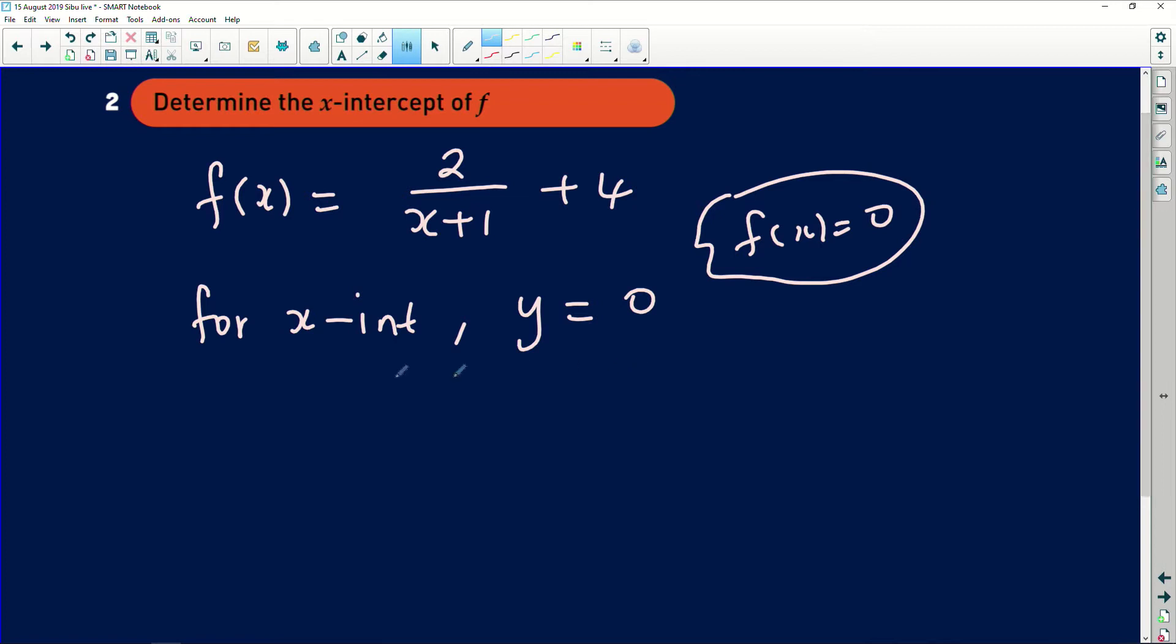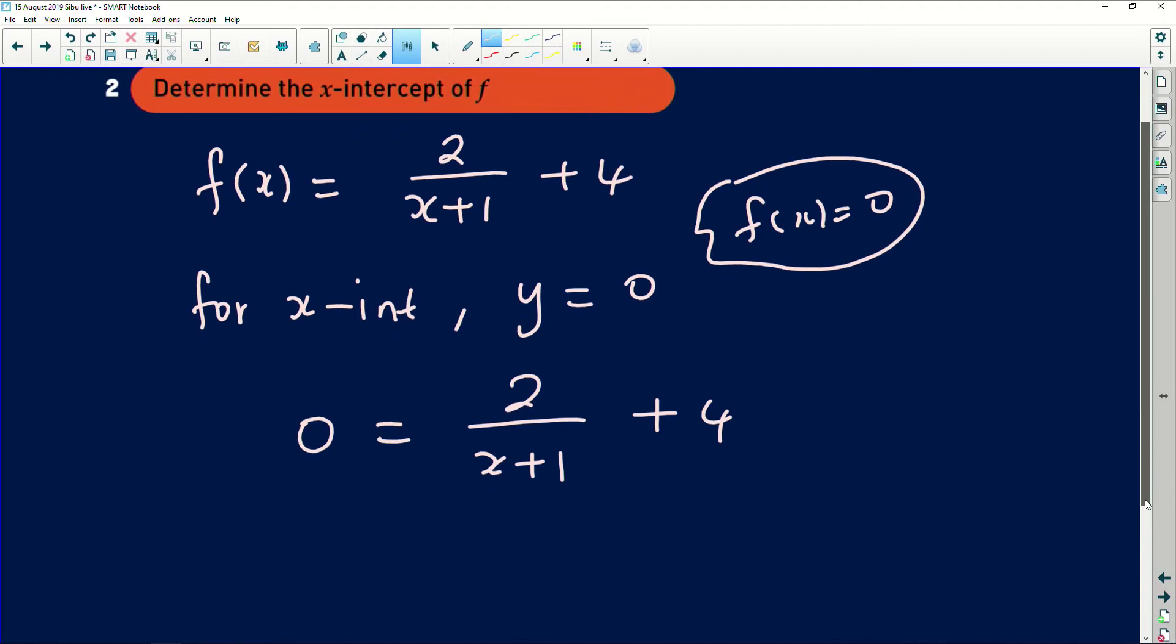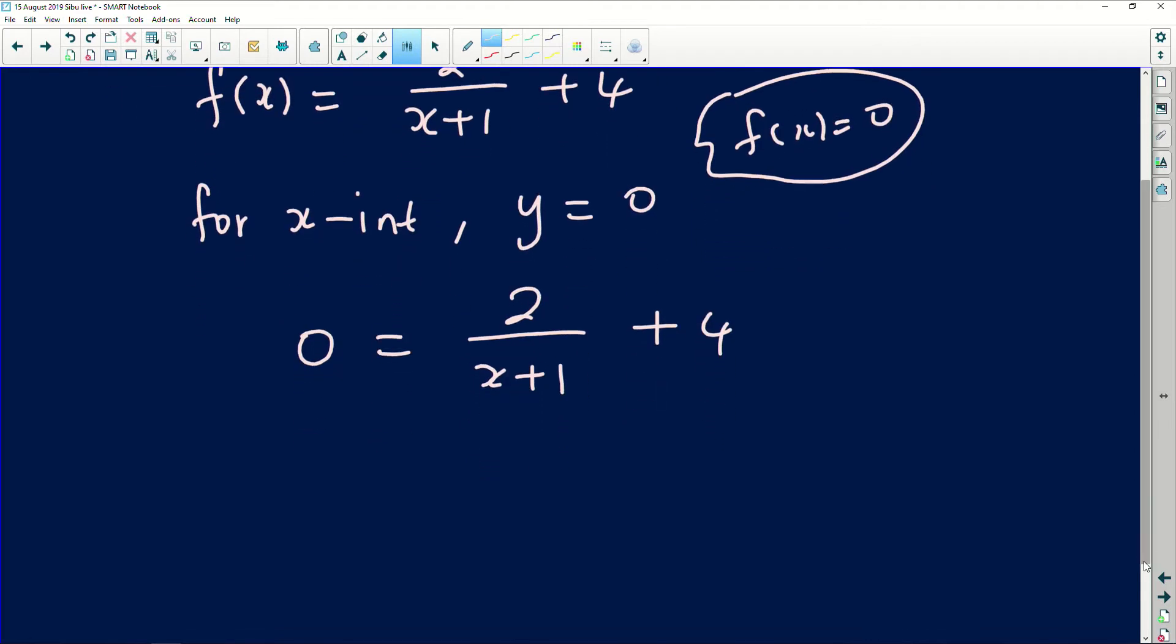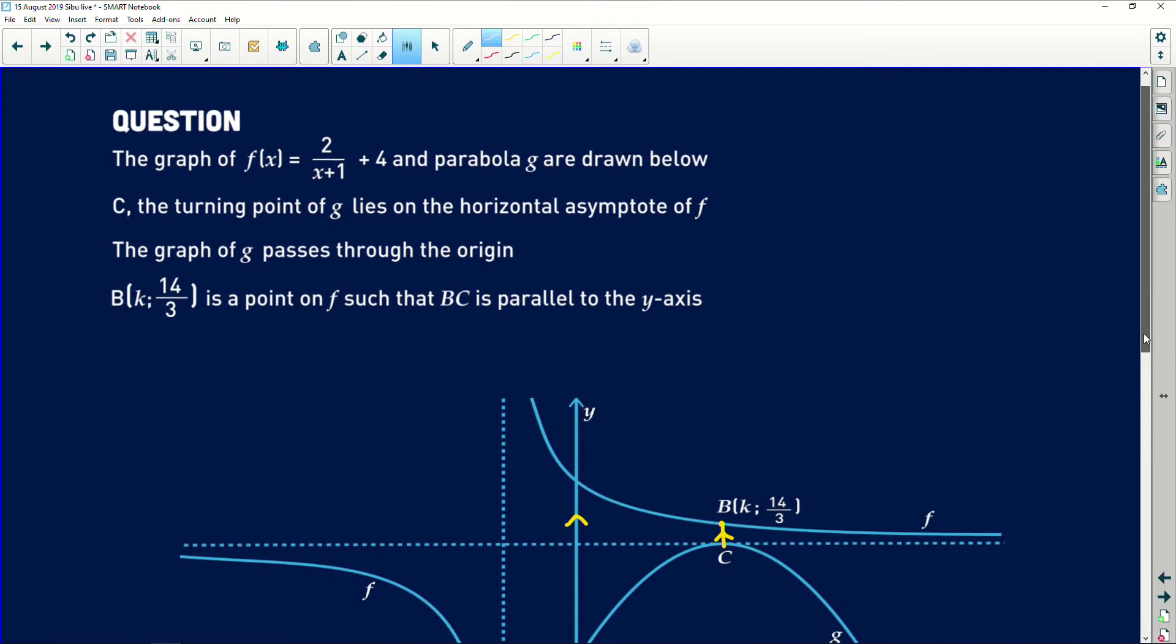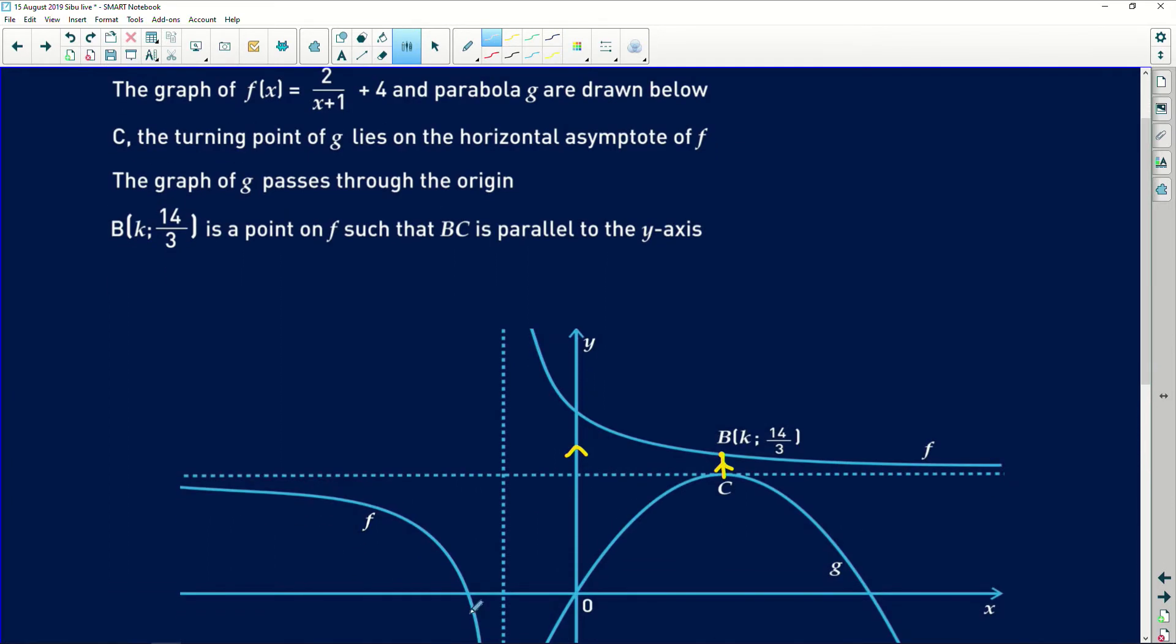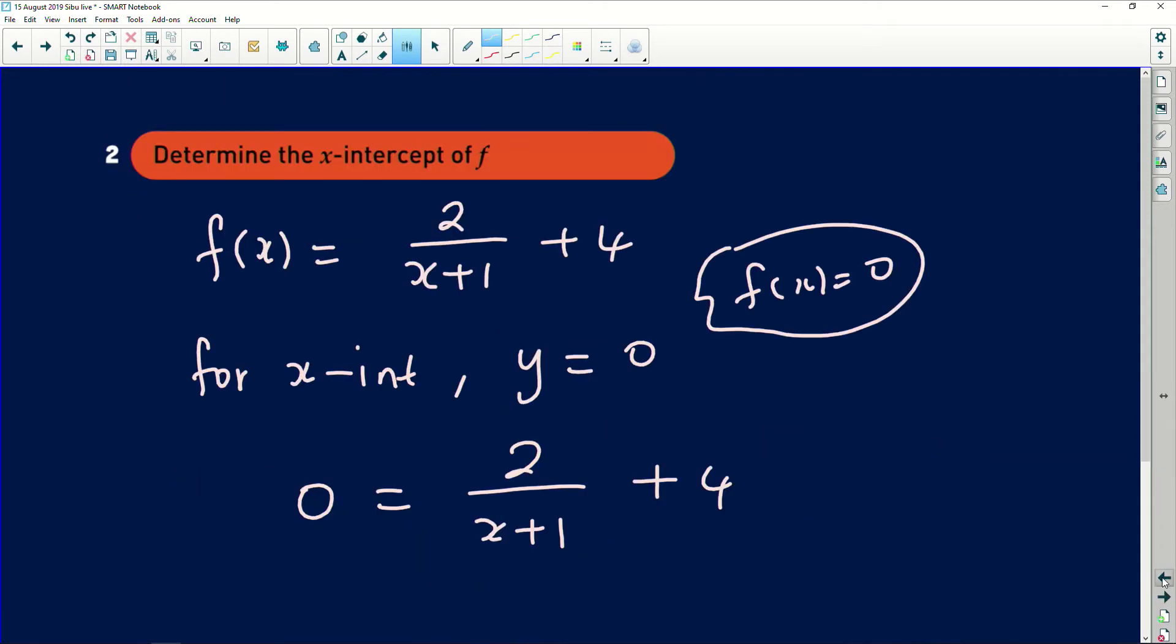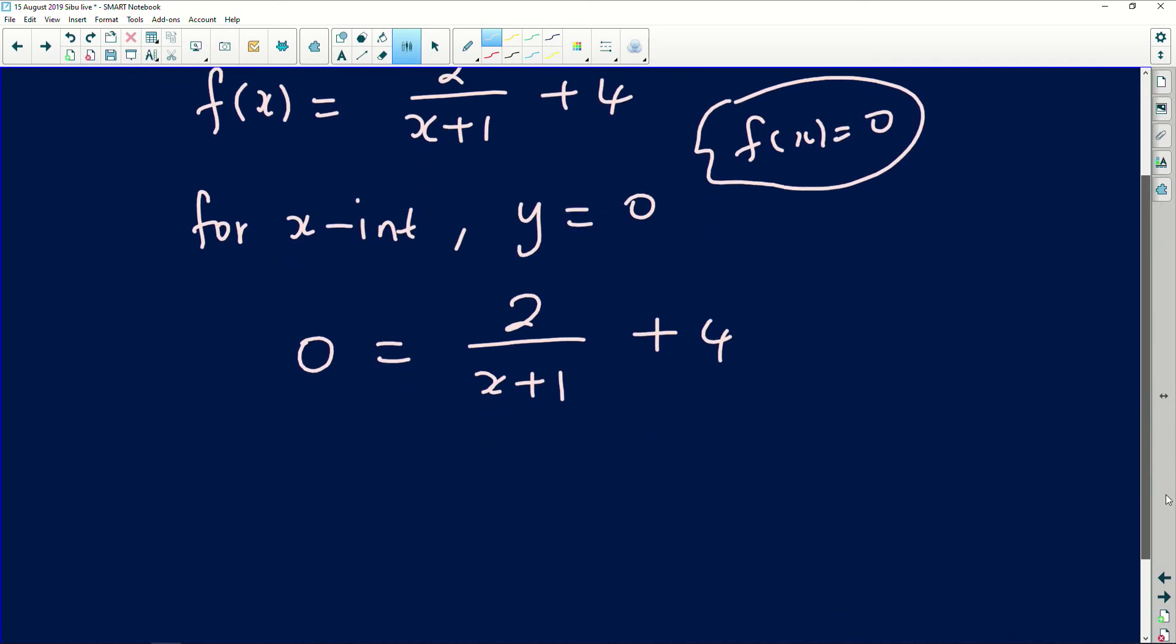You decide which one you want to use. We understand that they actually mean one and the same thing. So for x-intercept, y equals to 0. So I'm going to put f(x) = 0, which is my y. So 0 = 2/(x+1) + 4. This is the equation. Now, you need to understand that when we're asking for the x-intercept, we are looking for the value where the hyperbola cuts the x-axis.